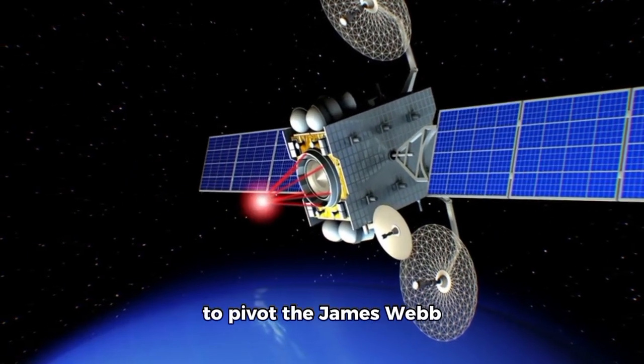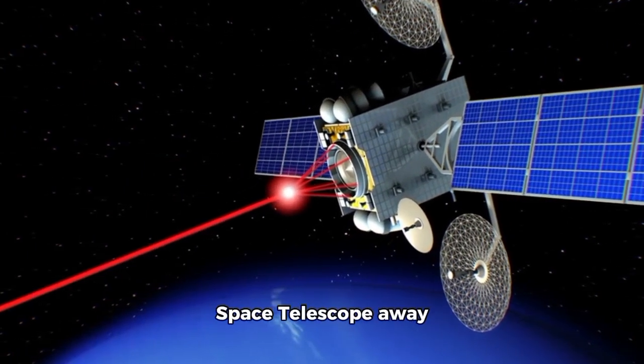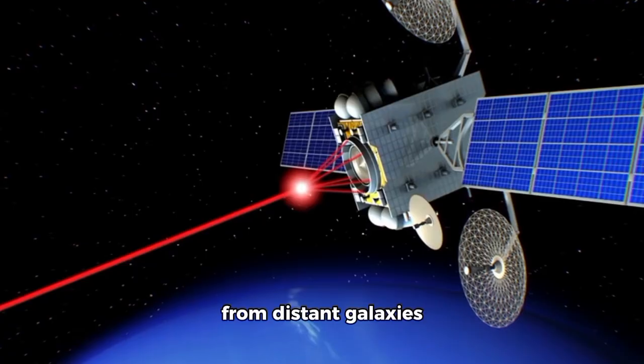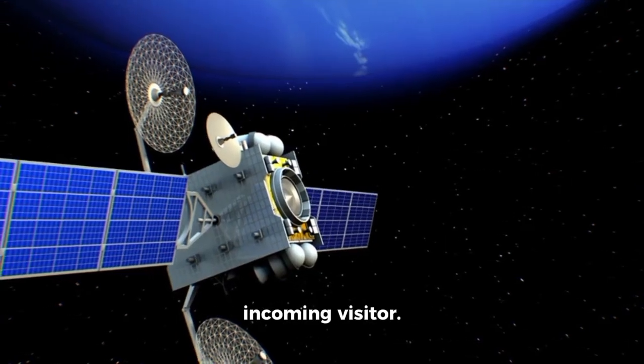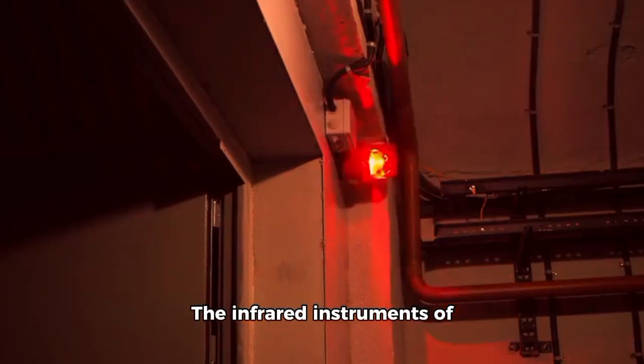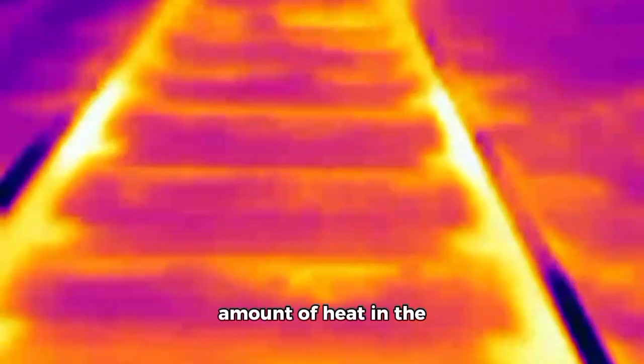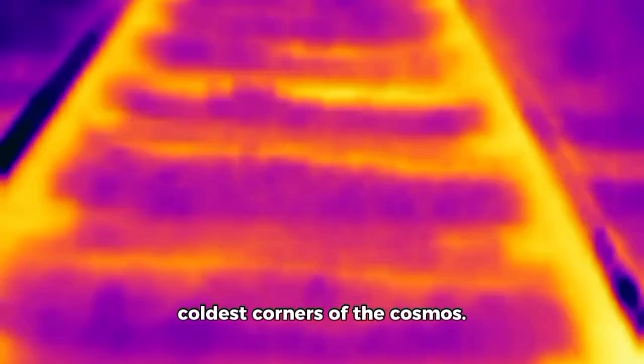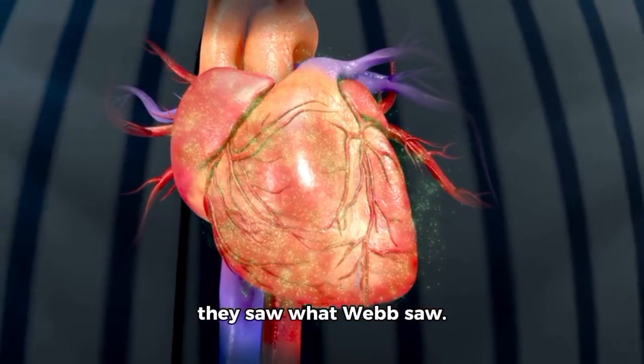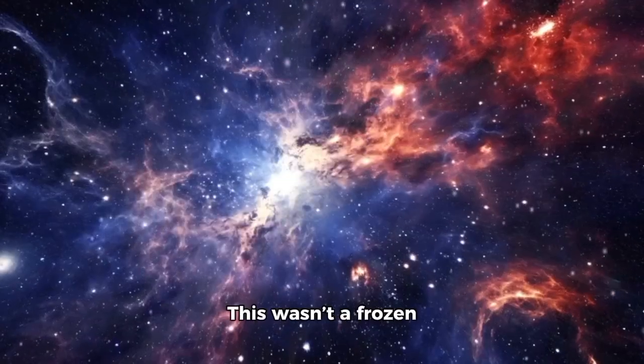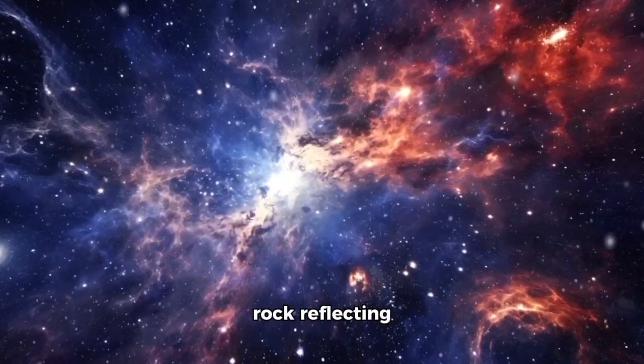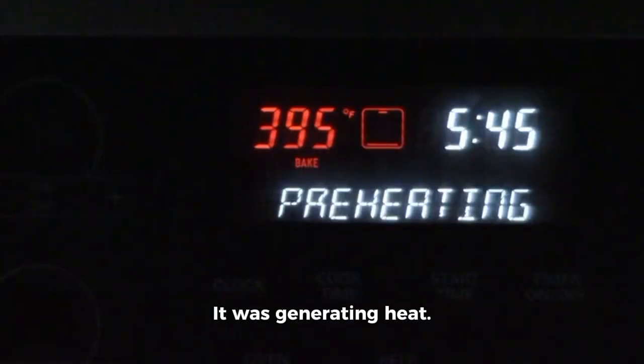As its trajectory changed and more secrets emerged, NASA made the extraordinary decision to pivot the James Webb Space Telescope away from distant galaxies and direct it toward the incoming visitor. The infrared instruments of Webb are capable of detecting the smallest amount of heat in the coldest corners of the cosmos. Scientists' hearts raced when they saw what Webb saw. This wasn't a frozen rock reflecting sunlight in a haze. It was generating heat.